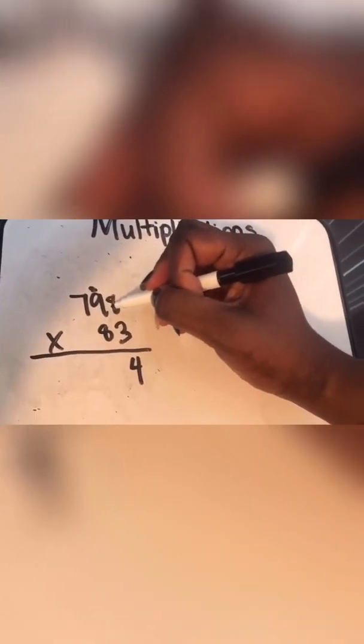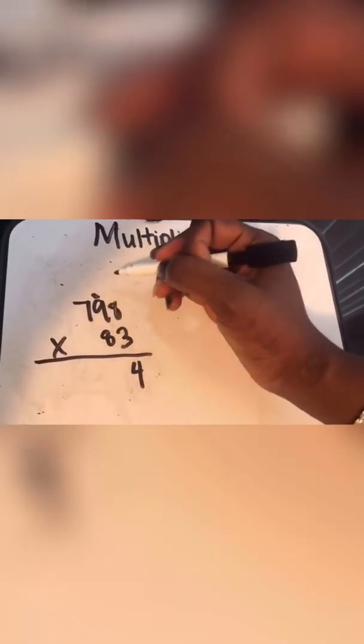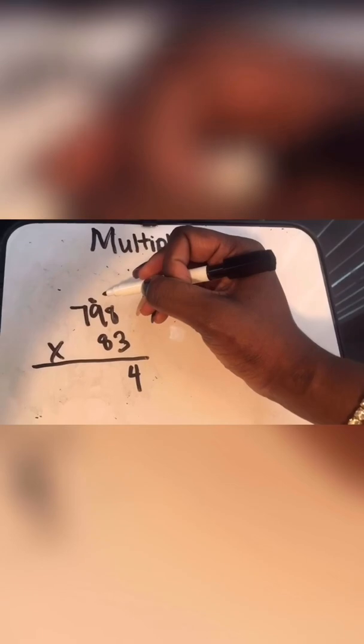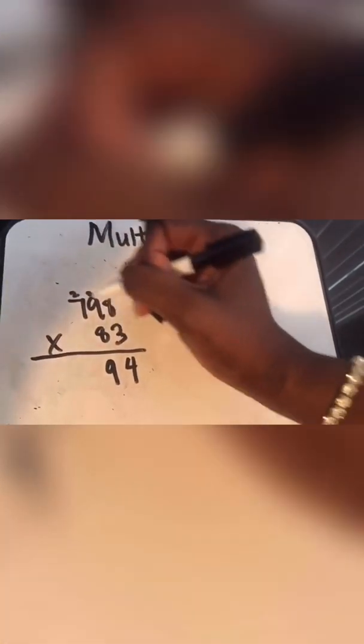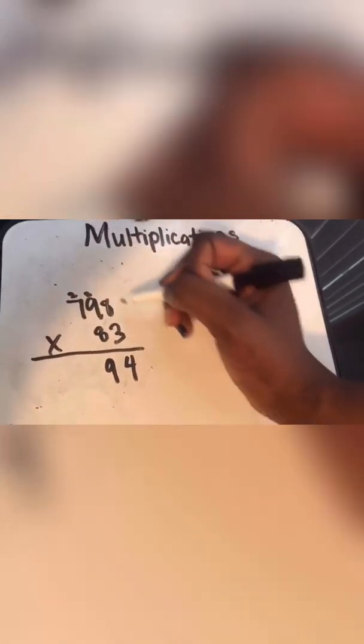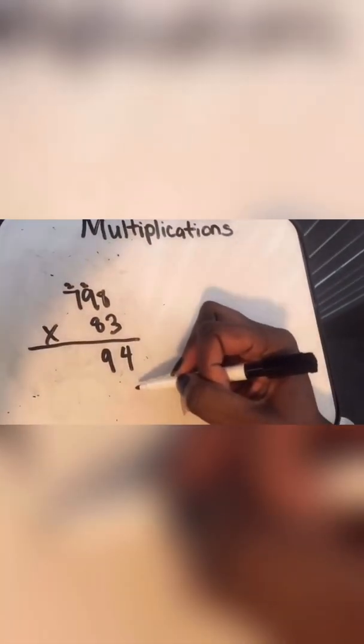Three times nine is 27. 27 plus two, don't forget that, is 29. We're going to put that two here. Three times seven is 21. Plus two is 23.